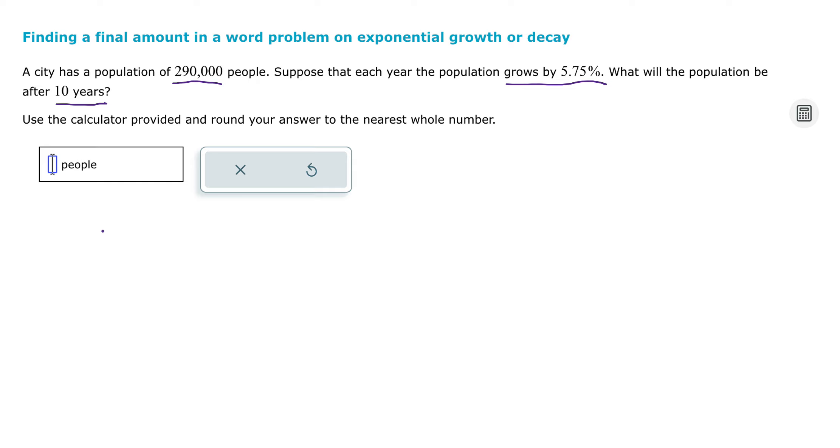So when we're setting up these problems, we're going to start with our initial amount. So we take that initial amount, I'm going to call that P for principal, and then we take one, either plus or minus the rate.